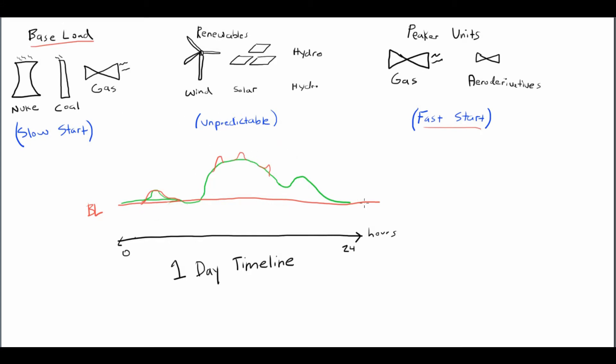Now that you know what baseload technology is, it gives you a solid backbone of the grid. You know what peaker units do - they come in whenever there's a sudden surge of demand, they come in to fill that empty spot, that void. The only thing left to talk about is renewables. So renewables is your green energy, your environmentally friendly energy.